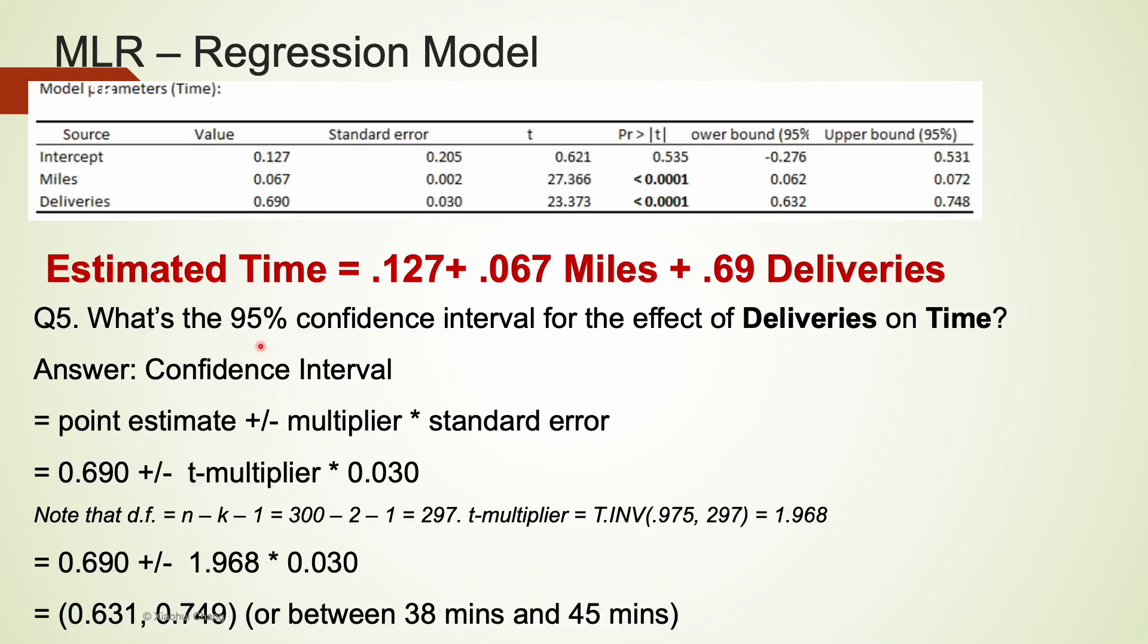Question 5: What's the 95% confidence interval for the effect of deliveries on time? This question asks us to estimate the effect. We can use confidence interval to do that. Confidence interval equals a point estimate plus minus a product of a multiplier and a standard error. I'm going to link the video where we talked about confidence interval in the upper right corner. Feel free to refer to that video. The point estimate here for regression is just a slope estimate, which can be found in the table, that's 0.69. And the standard error is usually given to us in the table as well, for deliveries that's 0.03.